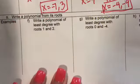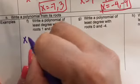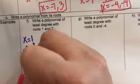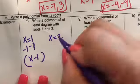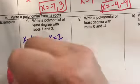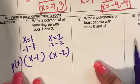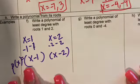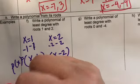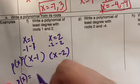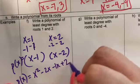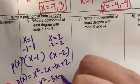More of the same: X equals one and X equals two. Set up factors: X minus one and X minus two. The polynomial is P of X equals X minus one times X minus two. Distributing gives X squared minus two X minus one X plus two, which simplifies to X squared minus three X plus two.